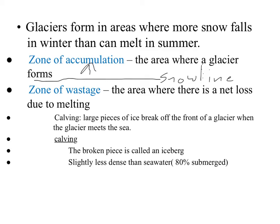A glacier is nothing more than a massive conveyor belt. Just like when you're at the supermarket, you have items that are going to roll along and drop — the whole time the glacier keeps moving forward. It's melting right here, but it keeps moving forward, rolling along. But it doesn't get past that point. Just like at the supermarket, the conveyor belt is moving but it's not changing location.